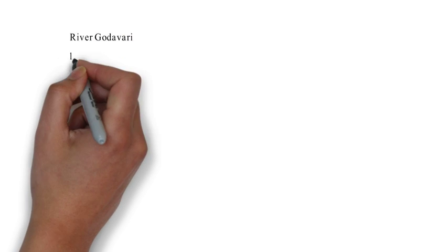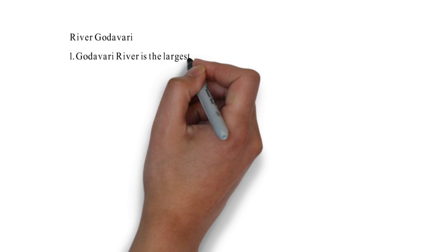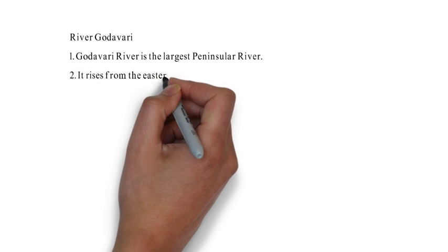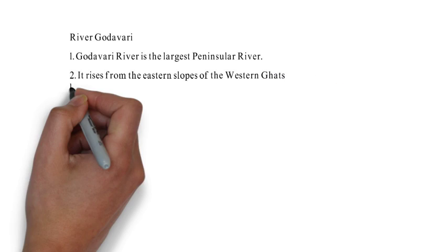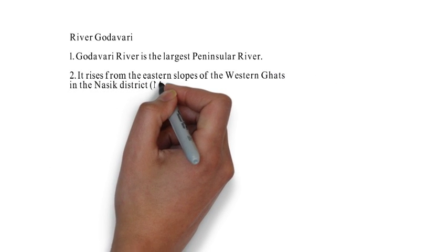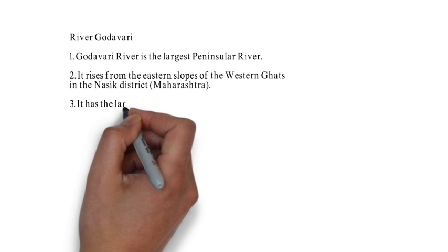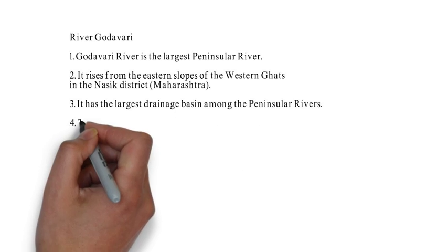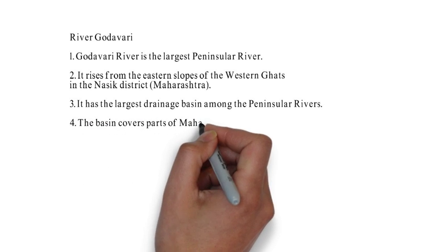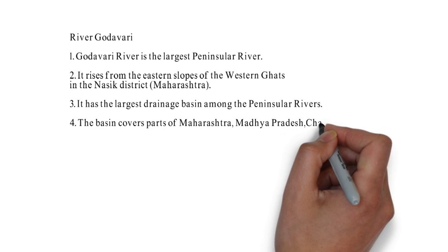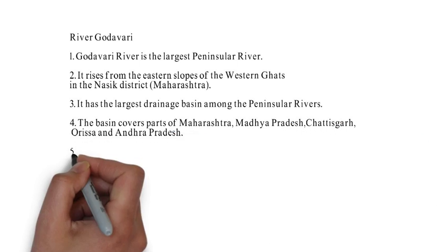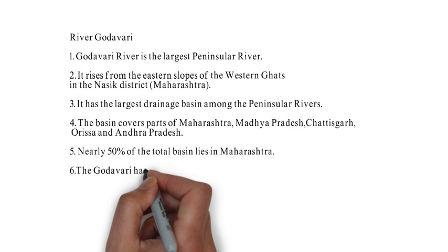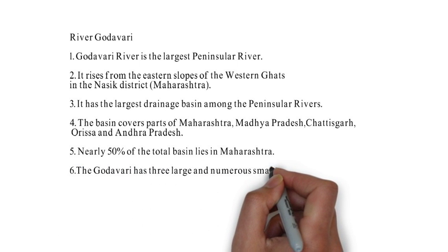Geography is not all about facts but also some simple common sense. The second most important river is the Godavari. The Godavari is the largest peninsular river. It rises from the eastern slopes of the Western Ghats in the Nasik district of Maharashtra. It has the largest drainage basin among peninsular rivers, which is why it is also known as Dakshin Ganga. It drains nearly 50% of Maharashtra and crosses through Madhya Pradesh, Chhattisgarh, Odisha, and Andhra Pradesh. Its three important large tributaries are Pranahita, Pen Ganga, and Indra Vati.